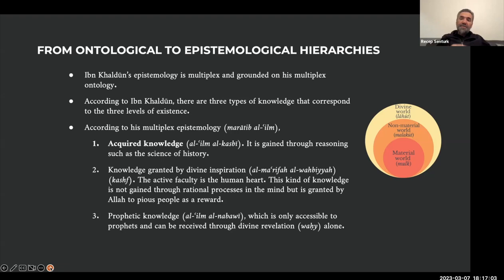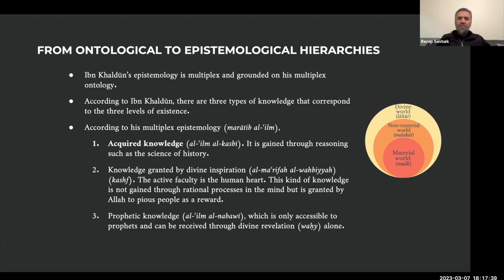According to his multiplex epistemology — maratib al-ilim — there are three types of knowledge: acquired knowledge; knowledge granted by divine inspiration, which we can call gifted knowledge; and then prophetic knowledge, the knowledge of the messengers of Allah. As discussed in the previous lecture, Ibn Khaldun accepts the material world — Alam al-Mulk or Alam al-Shahada — the non-material world — Alam al-Malakut or Alam al-Ghayb — and also the divine world — Alam al-Lahut. Acquired knowledge is called al-ilm al-kasbi. It is gained through reasoning or research — this is the scientific, academic knowledge produced by research.